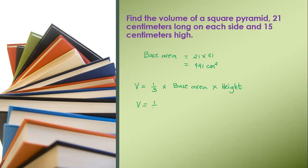Okay, 1 third times the base area, 441, times 15 equals 6,615 divided by 3 is equal to 2,205 cm.